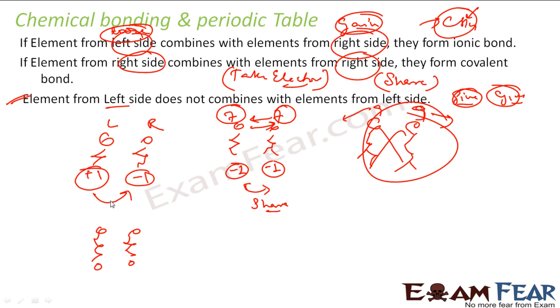That's why if you see, the element on left can combine with the element on right, they'll form ionic bond, total transfer of electron. In the right side, both want electrons, so they can share. In the left side, both want to give electrons, so the pairing is not possible.